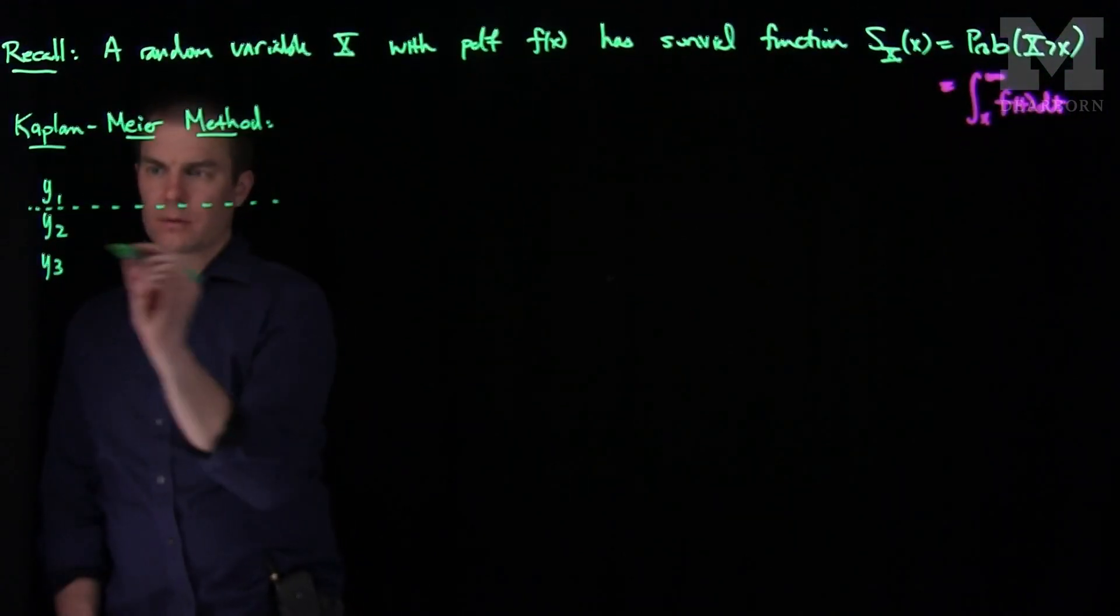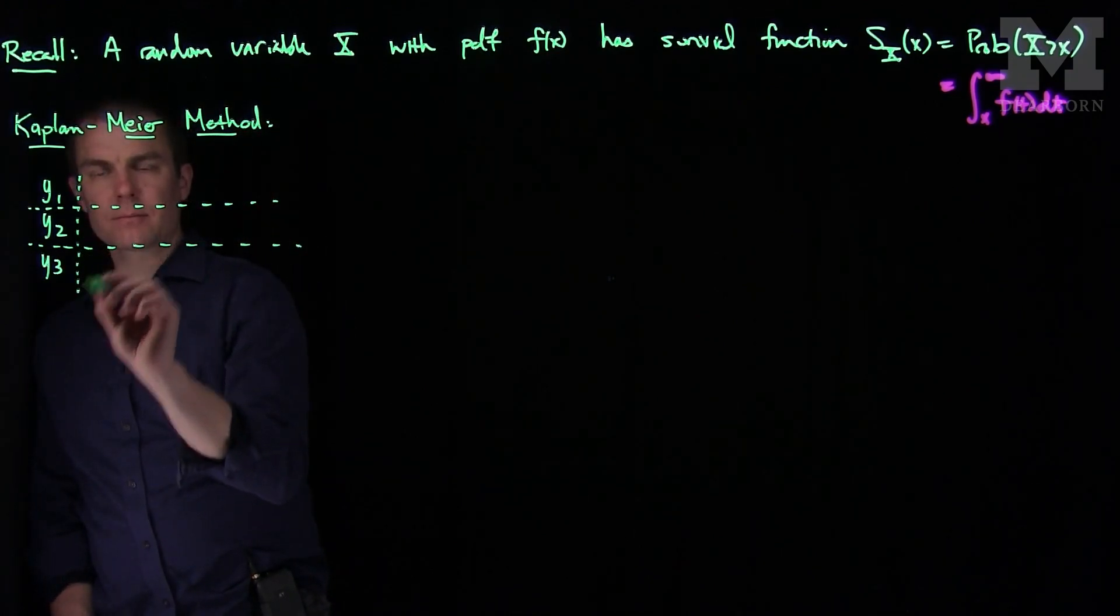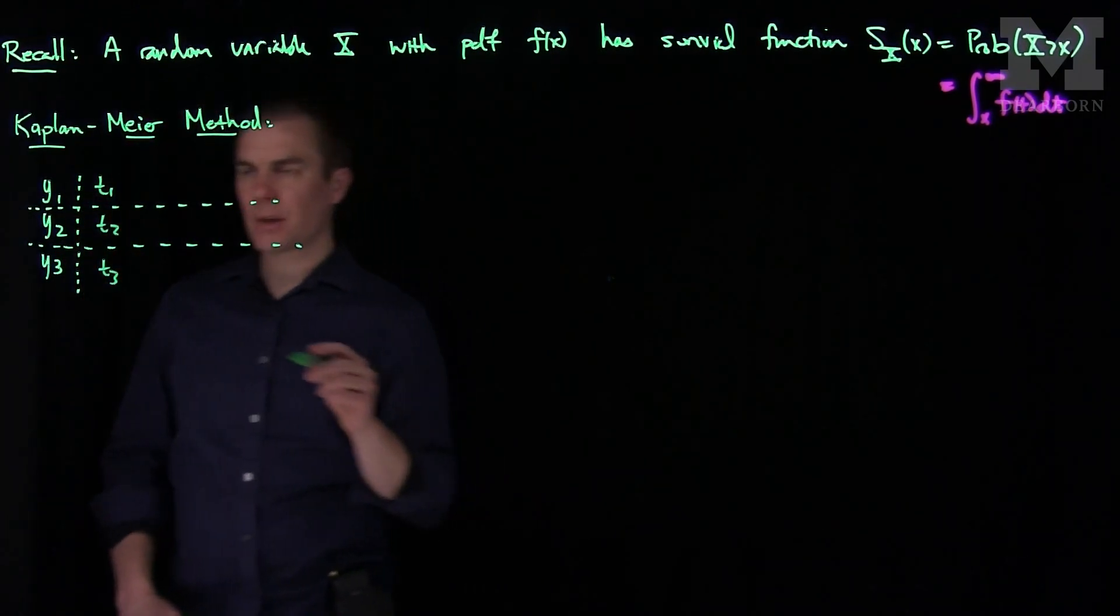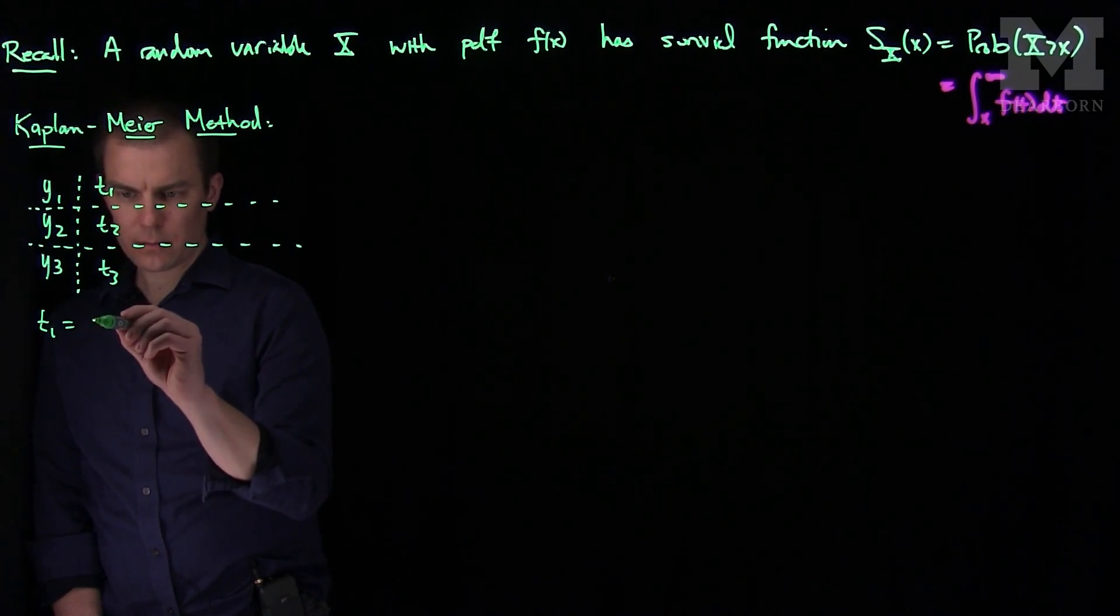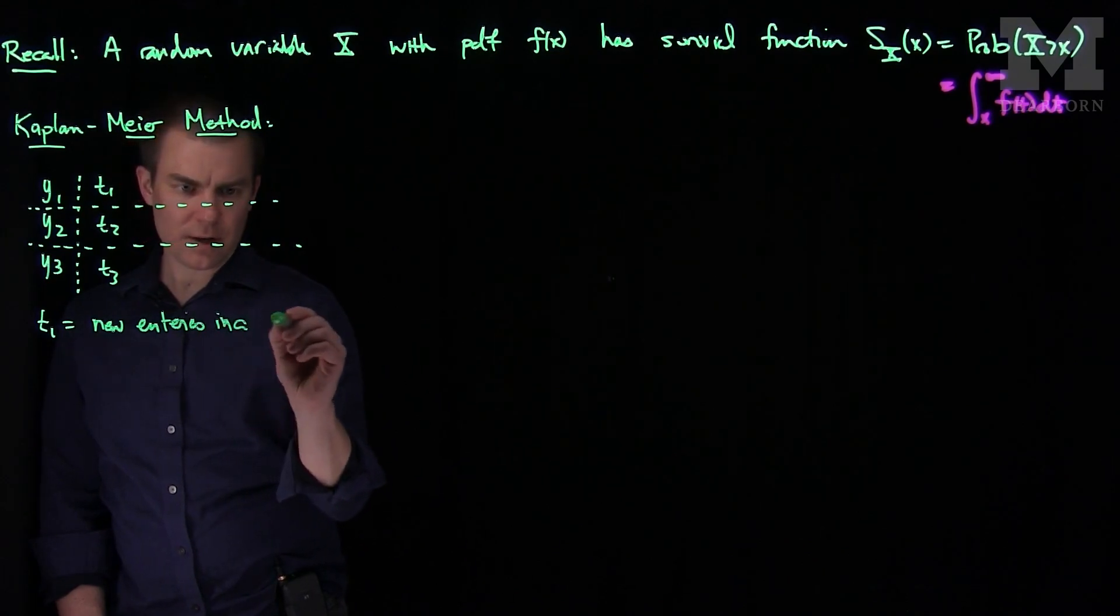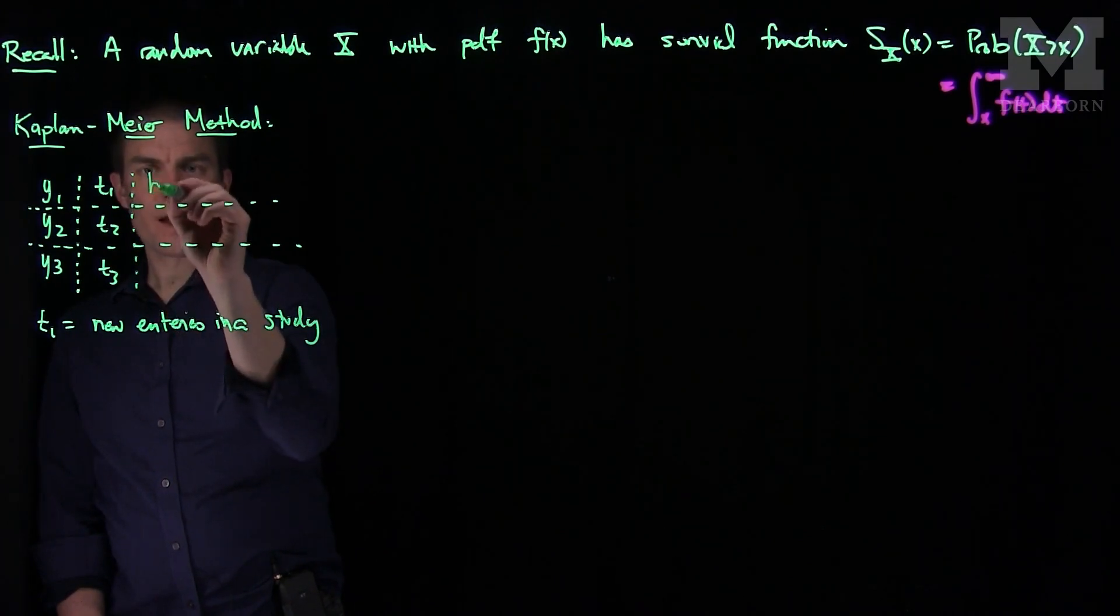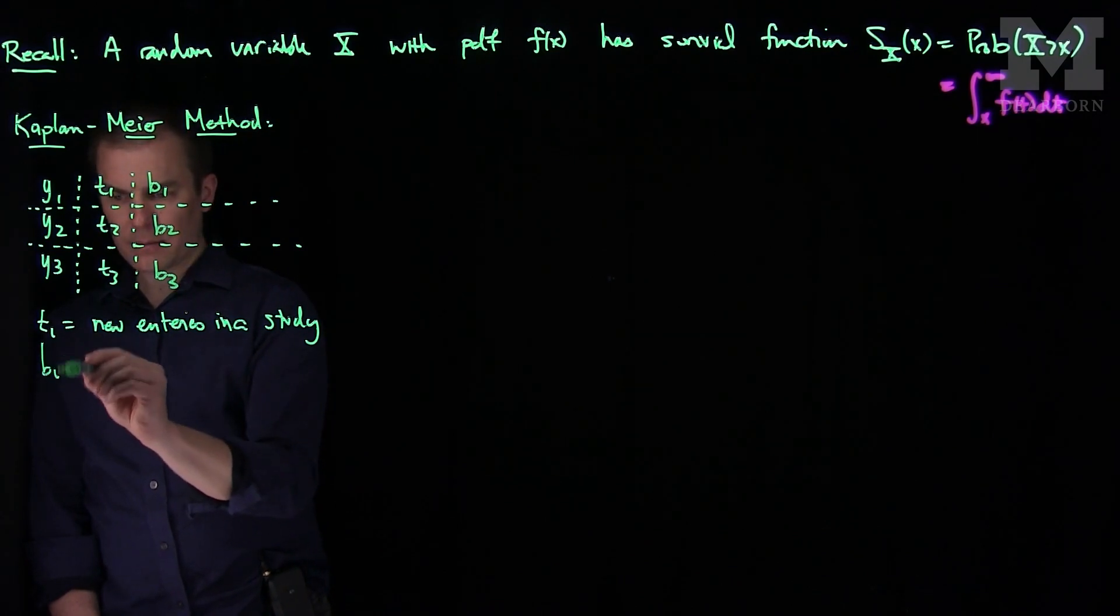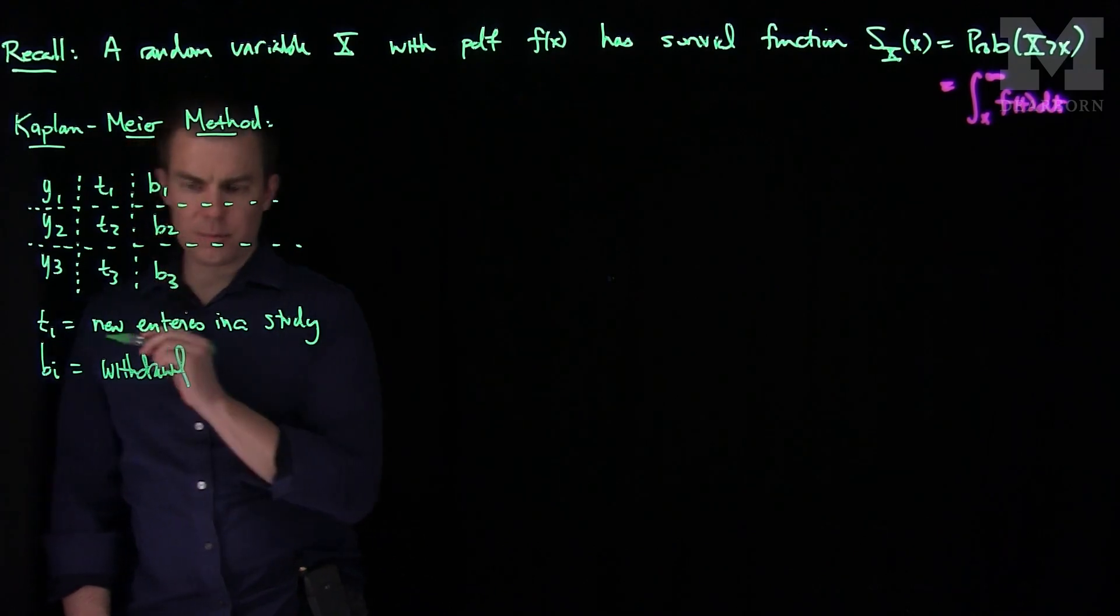And at these times, we can have several things that happen. We can have t1, t2, and t3. Here, t_i are new entries in a study. We can have b1, b2, and b3, where the b_i are the withdrawals from the study.